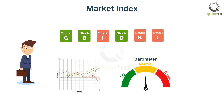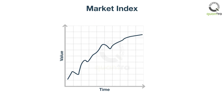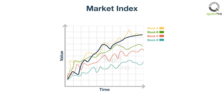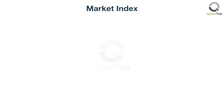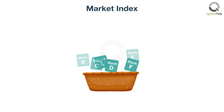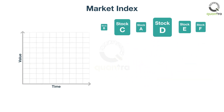An index is a statistical indicator that measures the relative changes in the stock market. It is usually computed from the prices of some of the major stocks traded on an exchange. As the stock's value changes, the index value changes. It is a tool used by investors and financial managers to summarize market movements. In other words, a stock market index is made of a basket of stocks, whose weights within an index are according to their market capitalization.